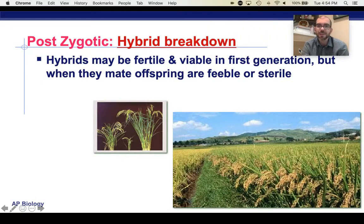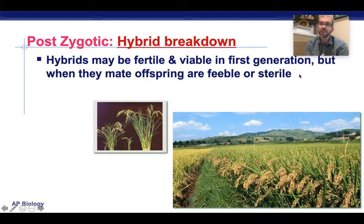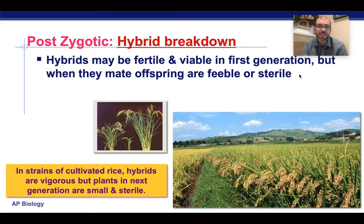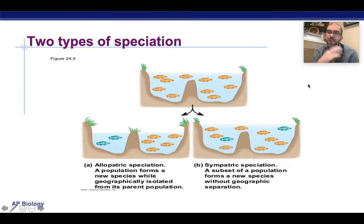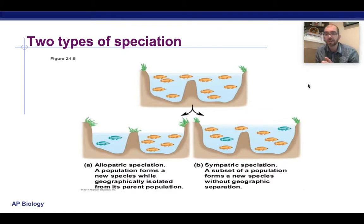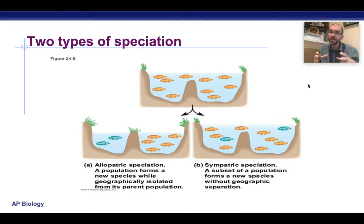The last postzygotic barrier is hybrid breakdown. This is when the parent has kids, the kids are fertile and have kids, but the ability of fertility breaks down and the grandchildren are now infertile. This is typically only seen in plants when making hybrids for bigger crop yields. As a vocab point, the pre- and postzygotic barriers also fall within the categories of allopatric or sympatric speciation. Allopatric happens when two species are physically separated — geographic isolation. Sympatric is when a new species develops in the same area with no physical barrier between them.